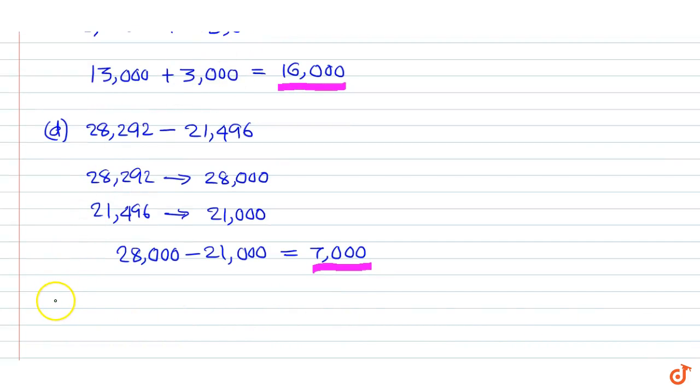Now, example 1: 12 minus 6. 12 rounds up to 10, 6 rounds up to 6, so 12 minus 6 is equal to 10 minus 6, that is equal to 4.